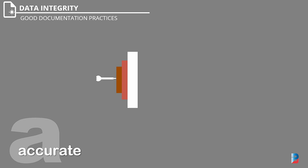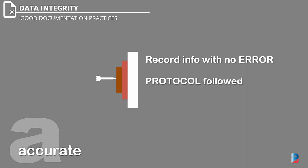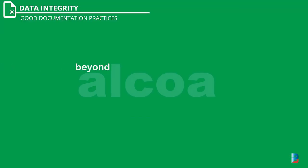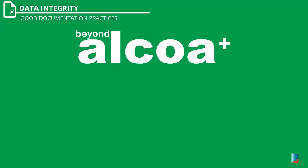Accurate: written or recorded data should be representative of the correct and recorded event without any error or bias. Always question: does the recorded information describe the conduct of the study without error? Did the conduct of the study conform with the protocol? Who made corrections and when were corrections made?